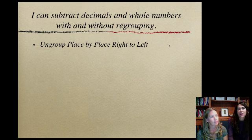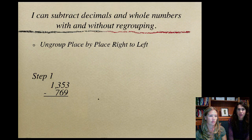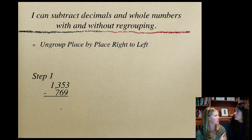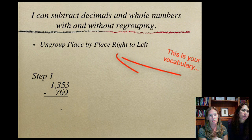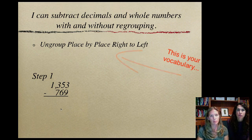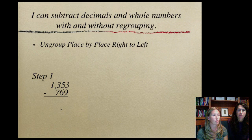We're going to review how to subtract and ungroup. We have 1353. Make sure you put this down - this will be the vocab thing to put down: the type of subtraction, place by place, right to left. And then the step by step, so you have that to go back to when you have to solve your own problems.